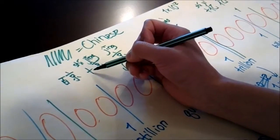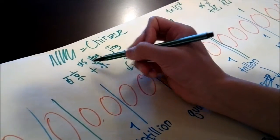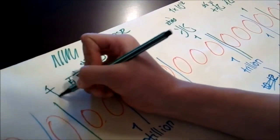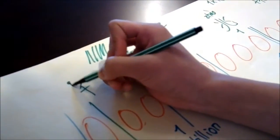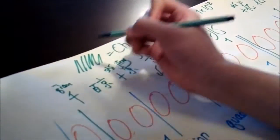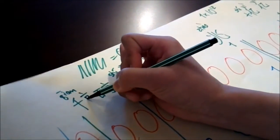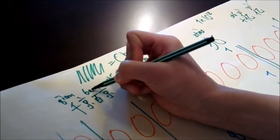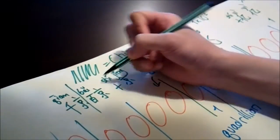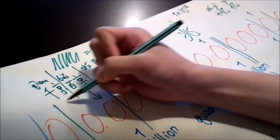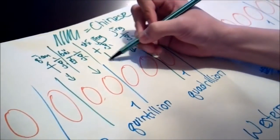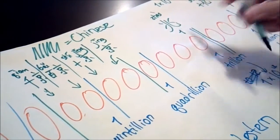So ten jing, hundred jing, then there's thousand jing. Thousand is as shown from here, ten thousand. So ten jing. And this is bai.